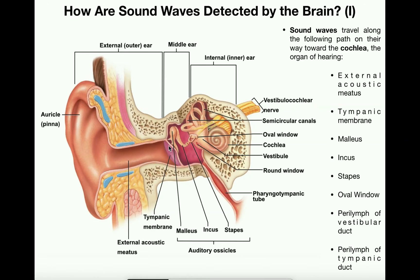When the tympanic membrane receives the sound wave it starts vibrating, and since it is in direct contact with the malleus, that triggers the malleus to start vibrating. The malleus is in direct contact with the incus, so that causes the incus to start vibrating — like the foot bone connected to the ankle bone. Then the incus causes the stapes to vibrate.